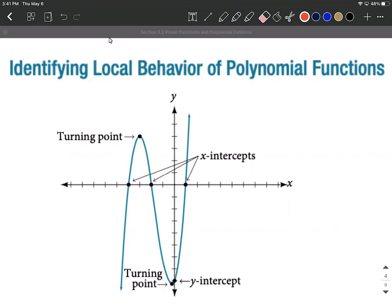The next thing we can mention for local behavior is our y-intercept. The y-intercept is going to occur whenever our x value is equal to zero and every one of these polynomial functions is going to have a y-intercept.